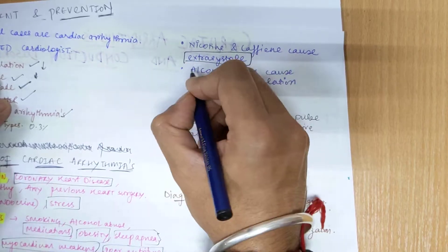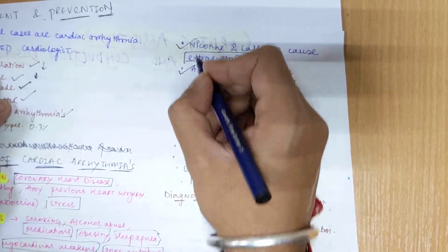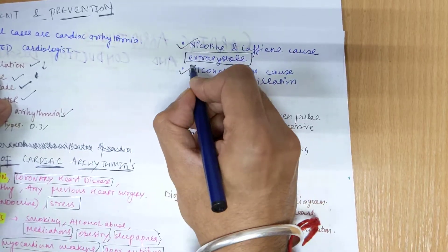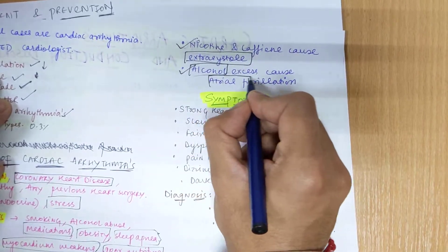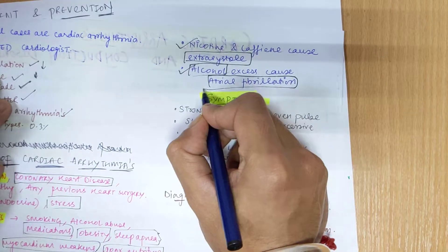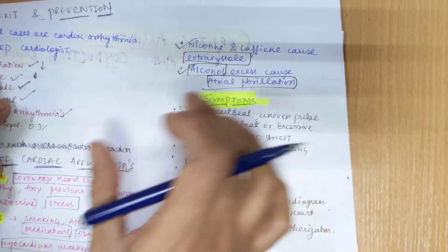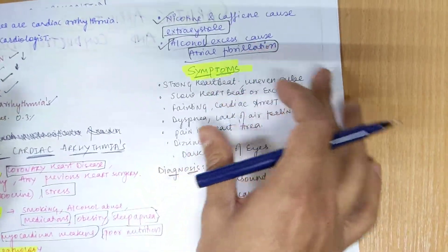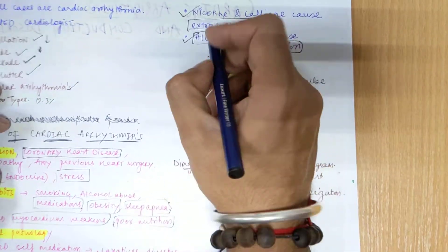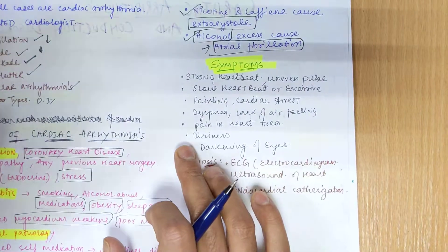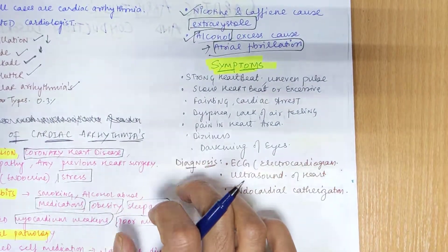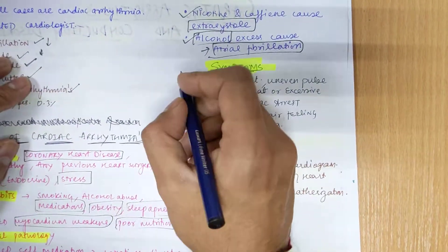Specifically, if a patient is taking nicotine or caffeine, they have chances of getting extrasystole pathologies. If taking alcohol in excess, there can be a case of atrial fibrillation — the most common cause and pathology of cardiac arrhythmia.